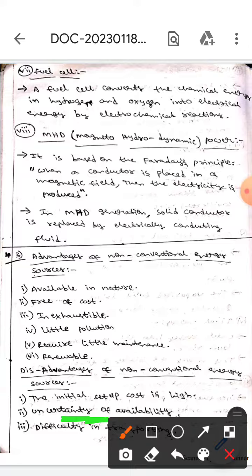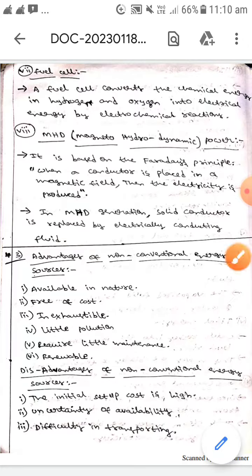Sometimes sunlight will be more, sometimes sunlight will be less, and sometimes wind will be more, sometimes wind will be less. This is one of the disadvantages. Another disadvantage is the difficulty in transporting non-conventional energy sources.